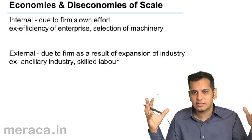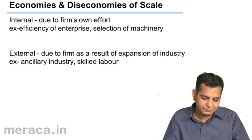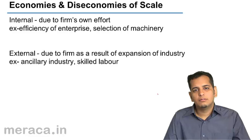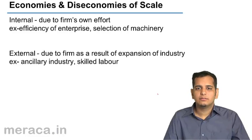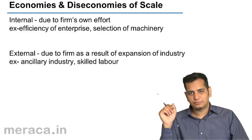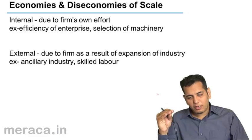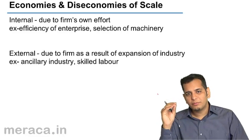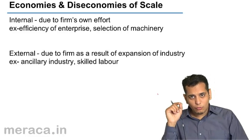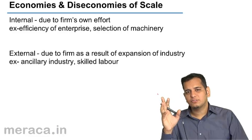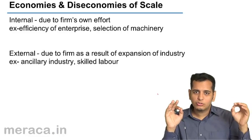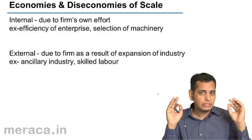As you increase the scale, you tend to get economies from it. The reason for this is that the firm employs a certain level of factors of production. Until those factors of production have achieved their optimum level of utilization, the cost goes on reducing. Once the factors of production have achieved their optimum utilization level, the cost of production becomes least at that point.